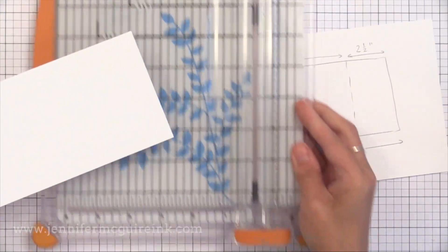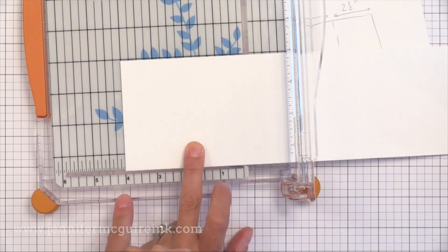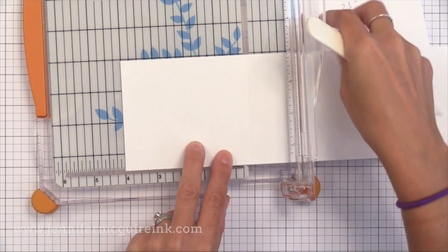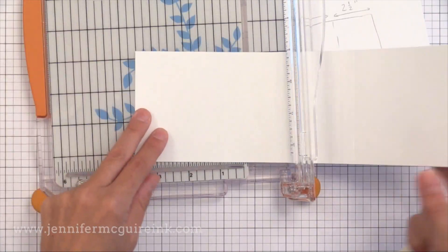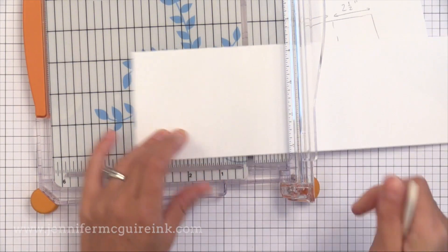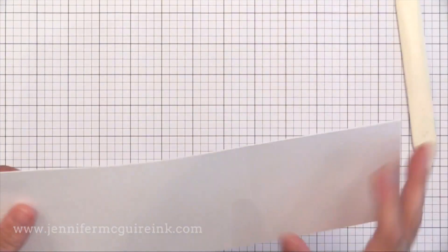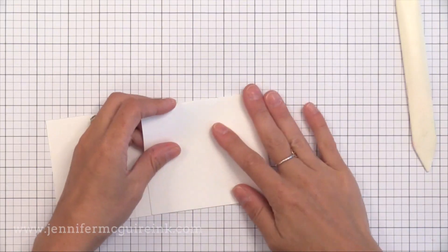Instead of using a score board I just use the little ledge in my trimmer to do my scoring. So I'm going to do the first score line four inches from one end. Then I'm going to flip my paper around and score at two and a half inches from the other end. Then I'll go ahead and crease my lines. Now you'll notice that the two flaps will overlap in the middle and that's what we need for this technique to work.